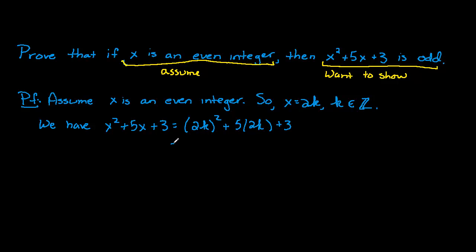And now, a little algebra, we'll work this out. 2k squared is 4k squared and 10k for our middle term plus 3.